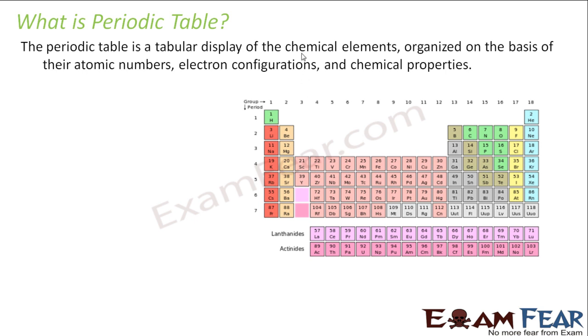Periodic table is a tabular display of chemical elements, organized based on their atomic numbers, electronic configurations, and chemical properties. You arrange these elements in tabular fashion such that elements with similar chemical properties are grouped together.